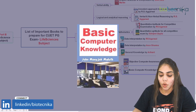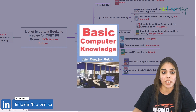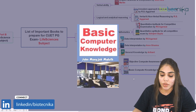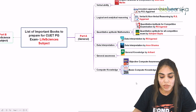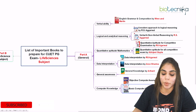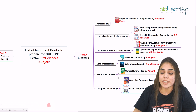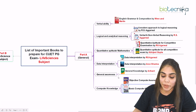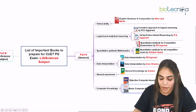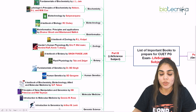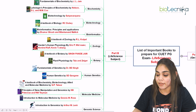The last section of Part A is computer knowledge. For this, you can go for Objective Computer Awareness by Arihant, or you can also go for Basic Computer Knowledge. There are two choices, so you can go for any of these books. So here we have seen Part A, which consists of verbal ability, logical and analytical reasoning, mathematics, data interpretation, general awareness, and computer knowledge.